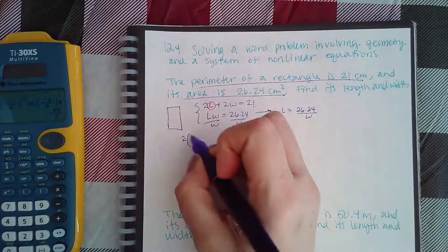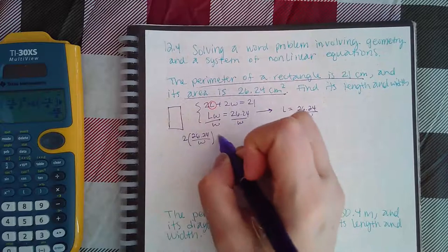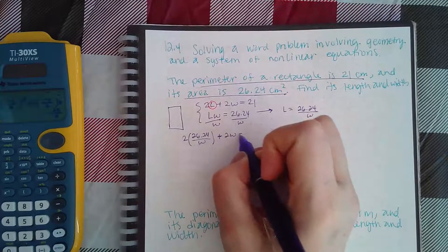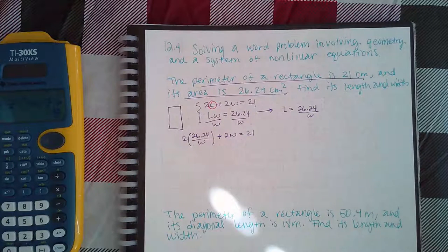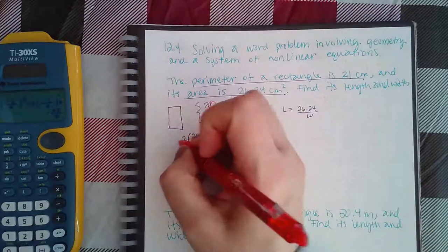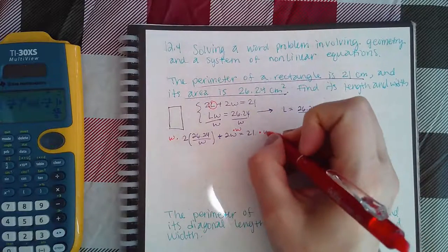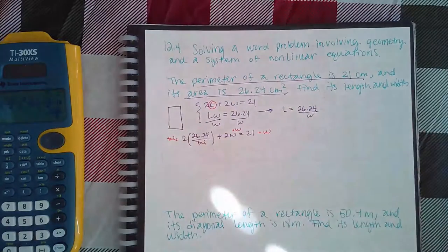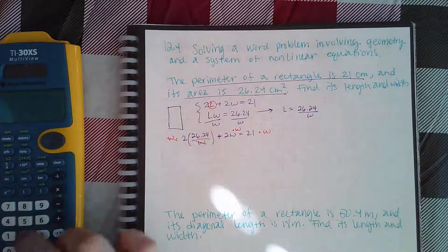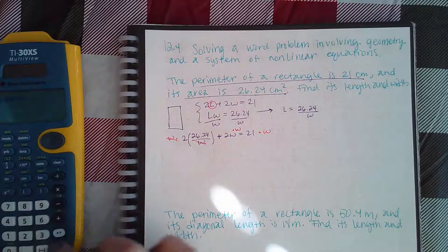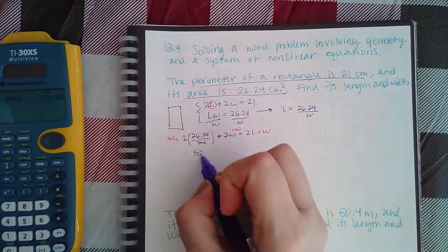So my top equation is going to be 2 times 26.24 over W plus 2W equals 21. I don't like fractions, so I'm going to go ahead and multiply by W to every term to get rid of that denominator. What is 2 times 26.24? This is 52.48.